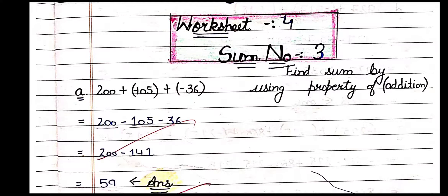The second step: we have to rearrange the numbers — positive numbers in front and negative numbers at the back. Remember: same sign, add. When integers have the same sign, we add all numbers with the same sign. Similarly, minus 105 and minus 36 — both are negative, so same sign, add.